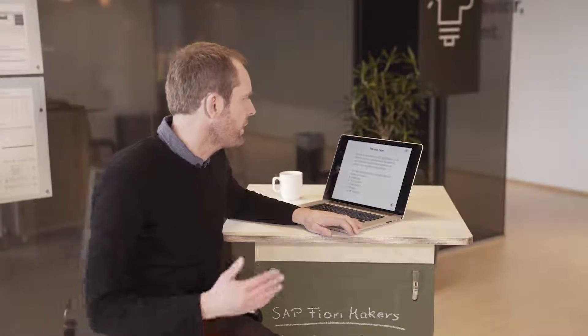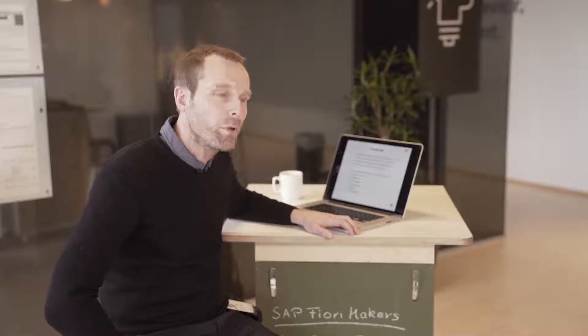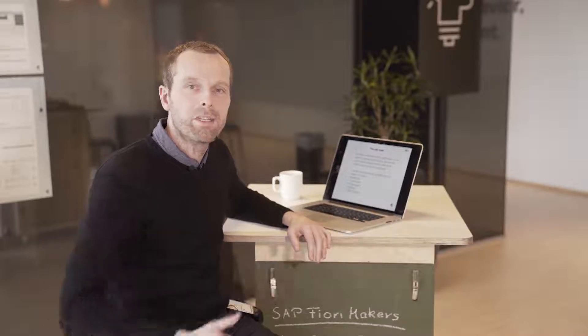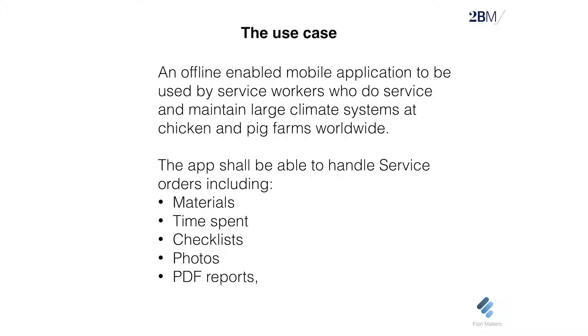As I mentioned, the application has to work offline, otherwise workers in situations without internet cannot open the app. We need to handle information about materials, time spent, photos taken, reports, and checklists — because when doing a service visit, workers have routine checks to perform, like verifying that alarm batteries are in place.